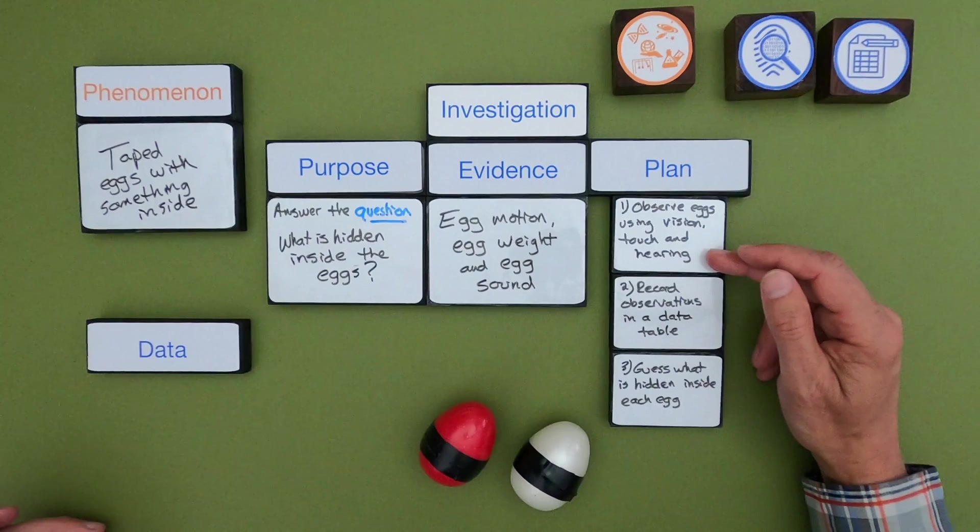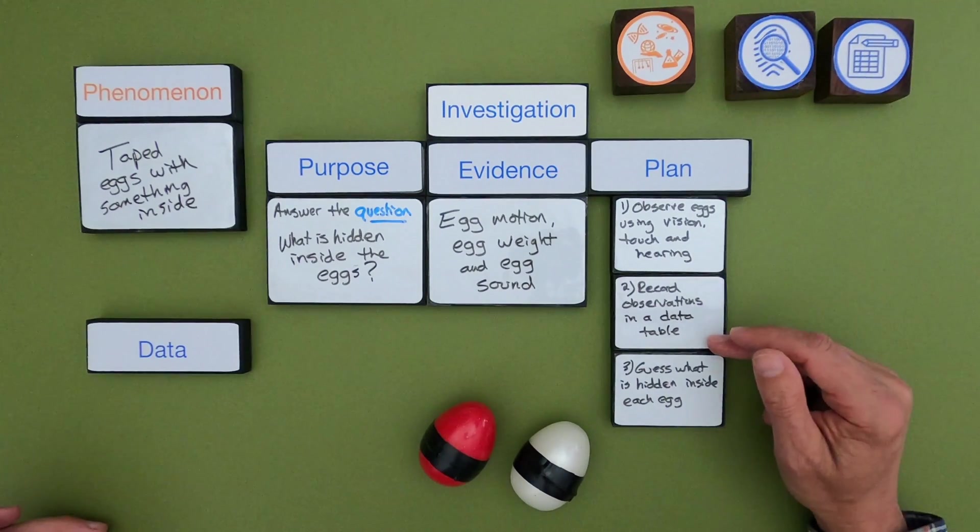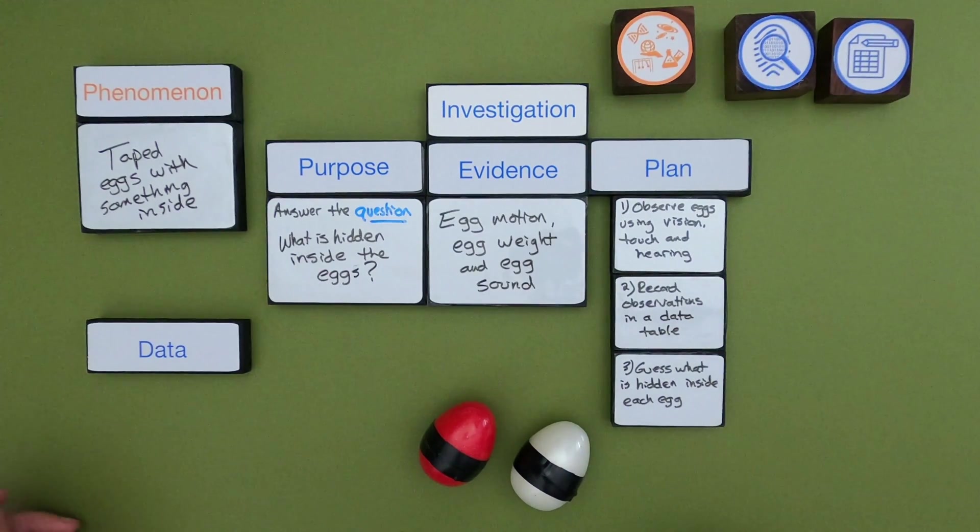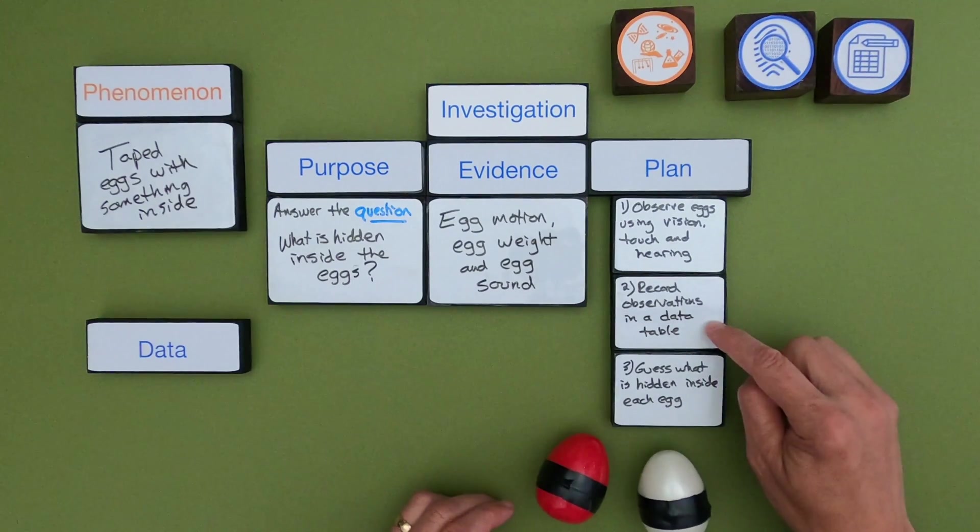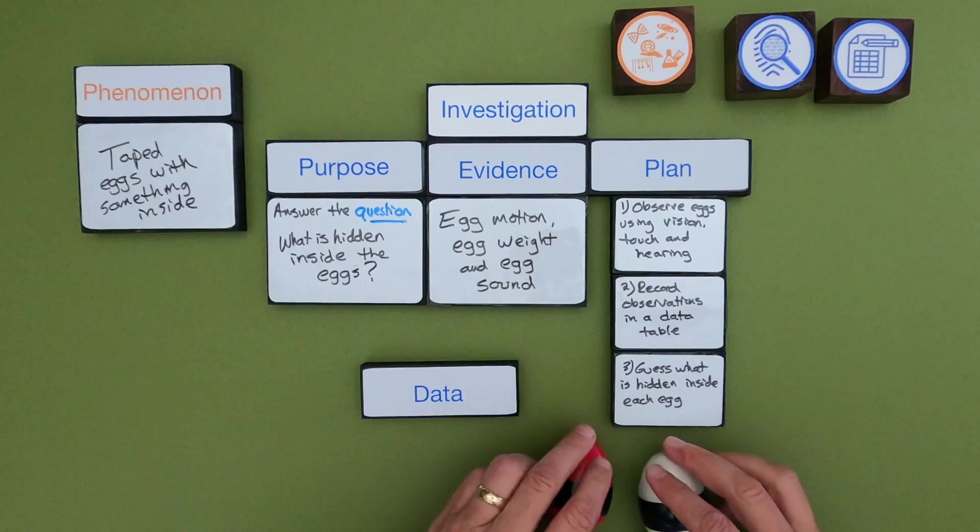So I said observe eggs using vision, touch, and hearing. Record observations in a data table and guess what's inside each egg. Now I don't think somebody could follow this because we don't have a data table. And that gets to the next part of an investigation.